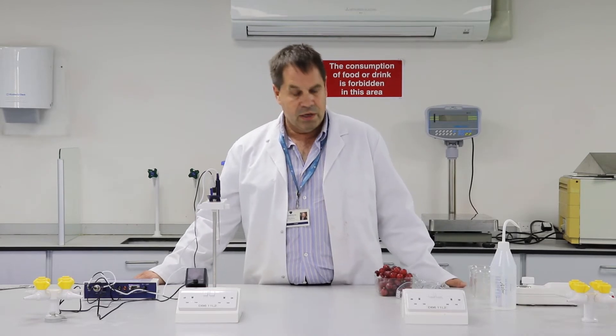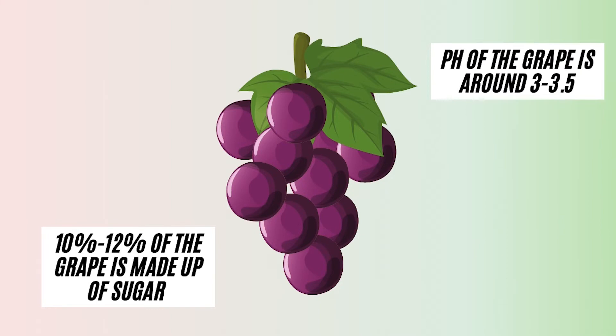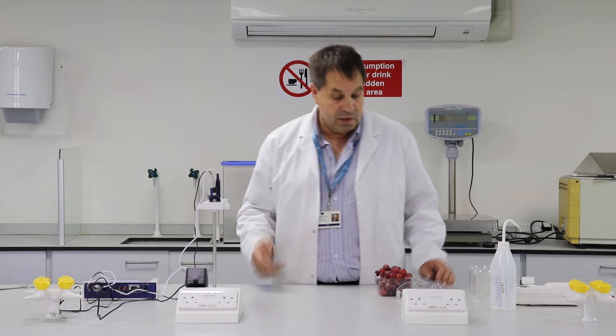Sugar makes up around about 10 to 12% of the grape. The acidity is around about pH 3, 3.5. Grapes are covered between orange juice and lemon juice. That acidity is very important.